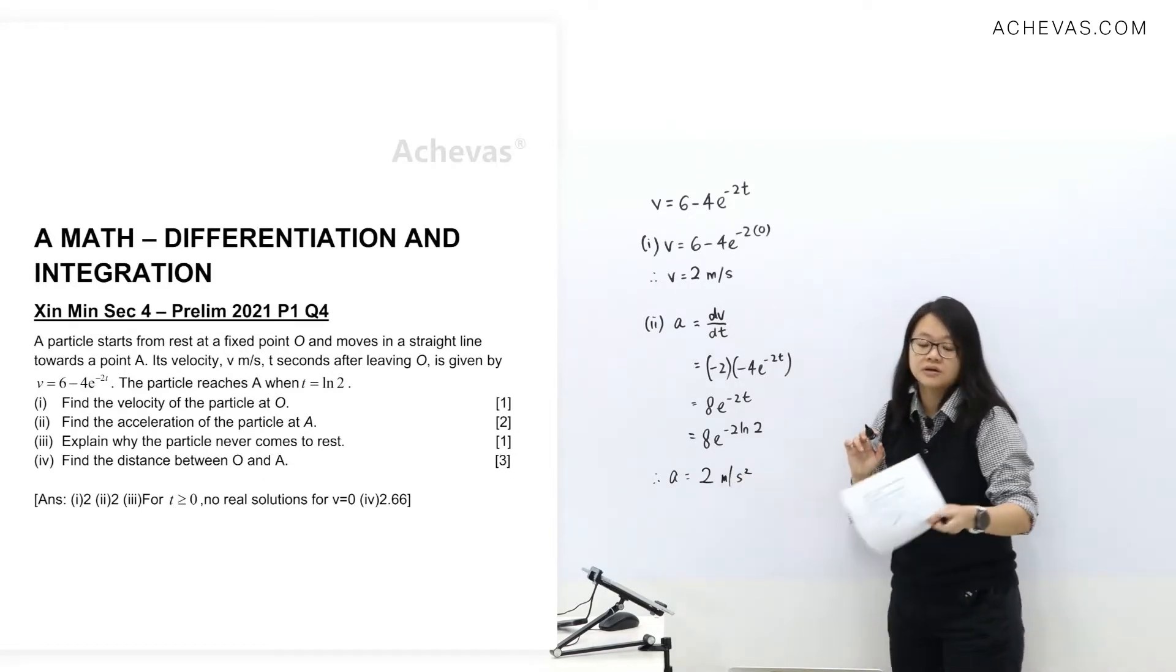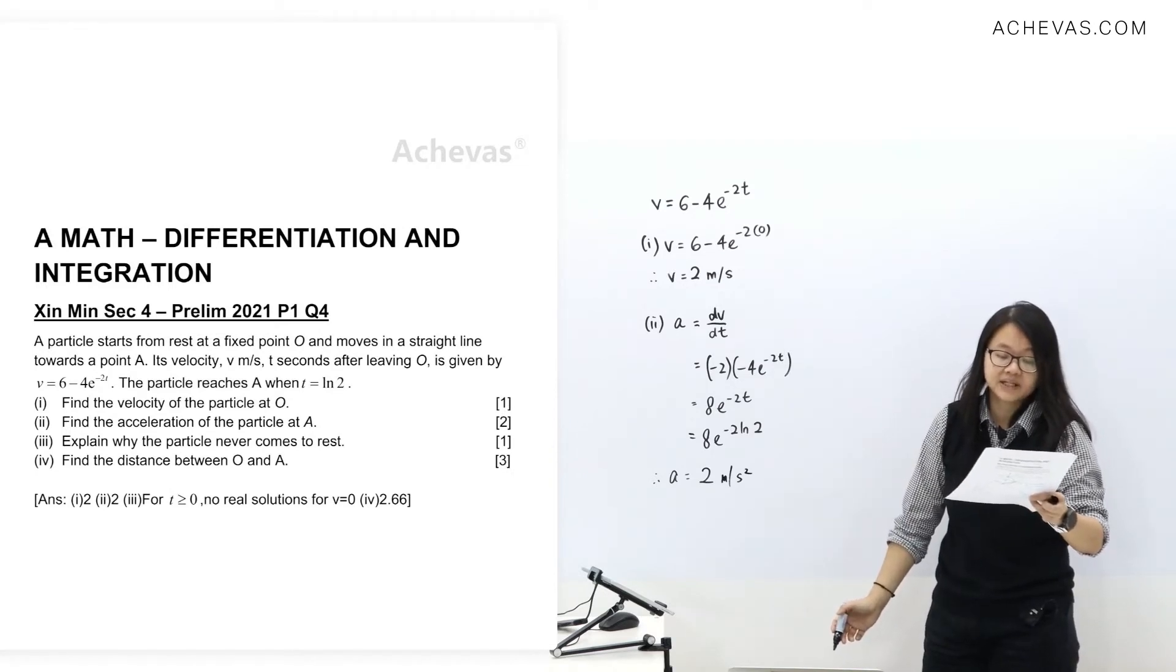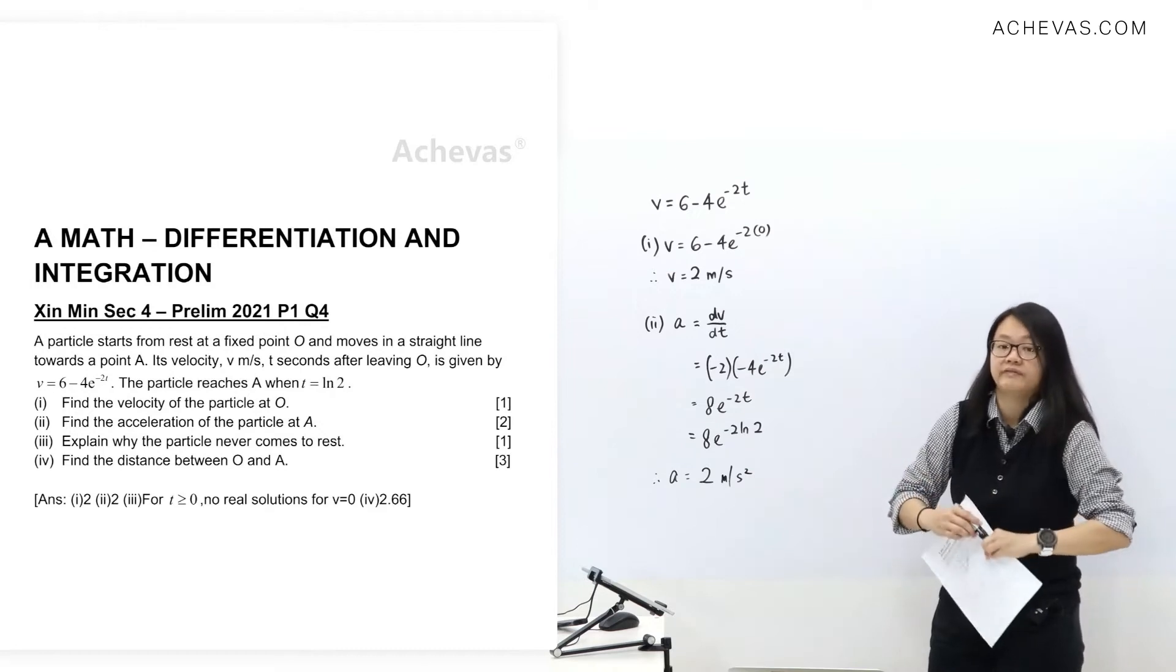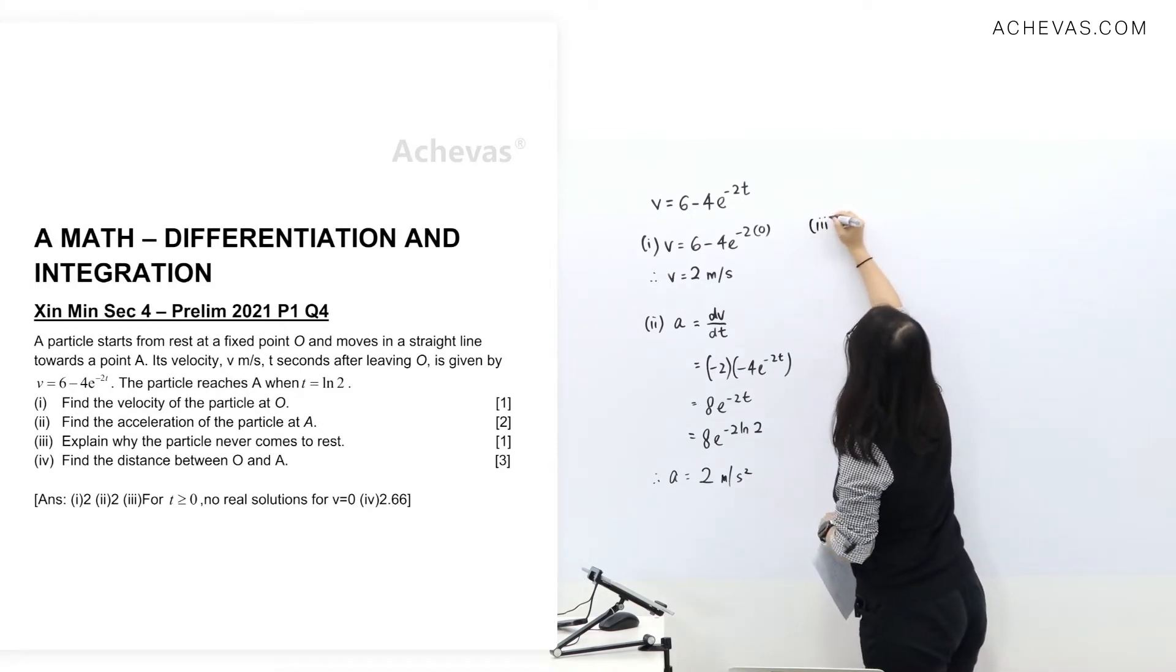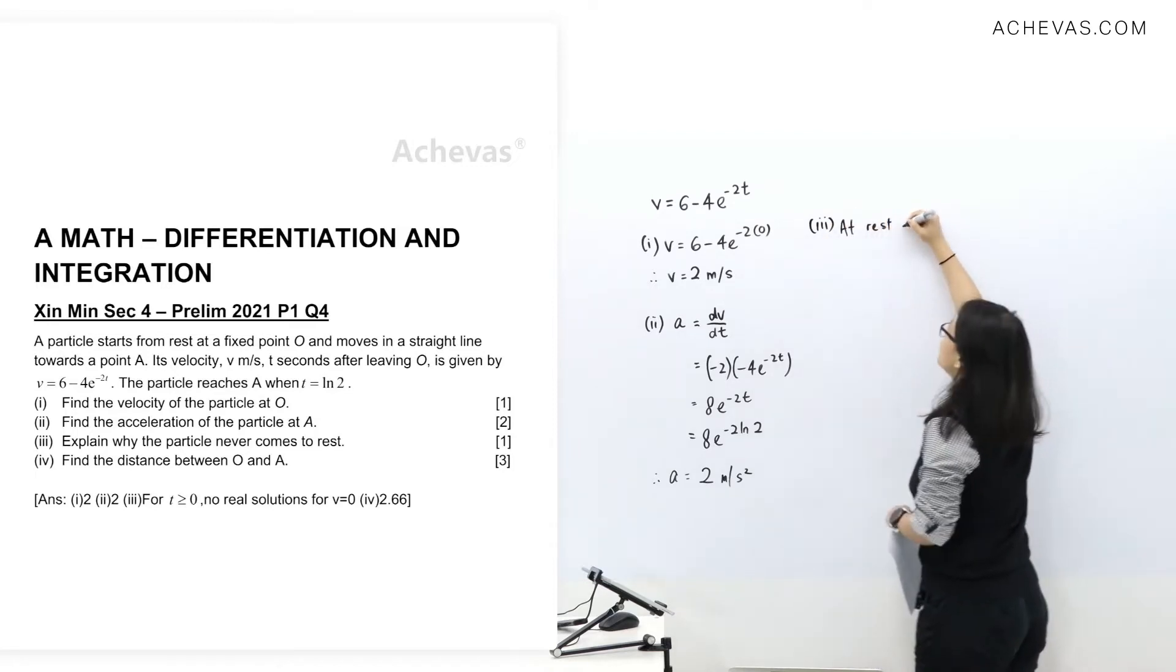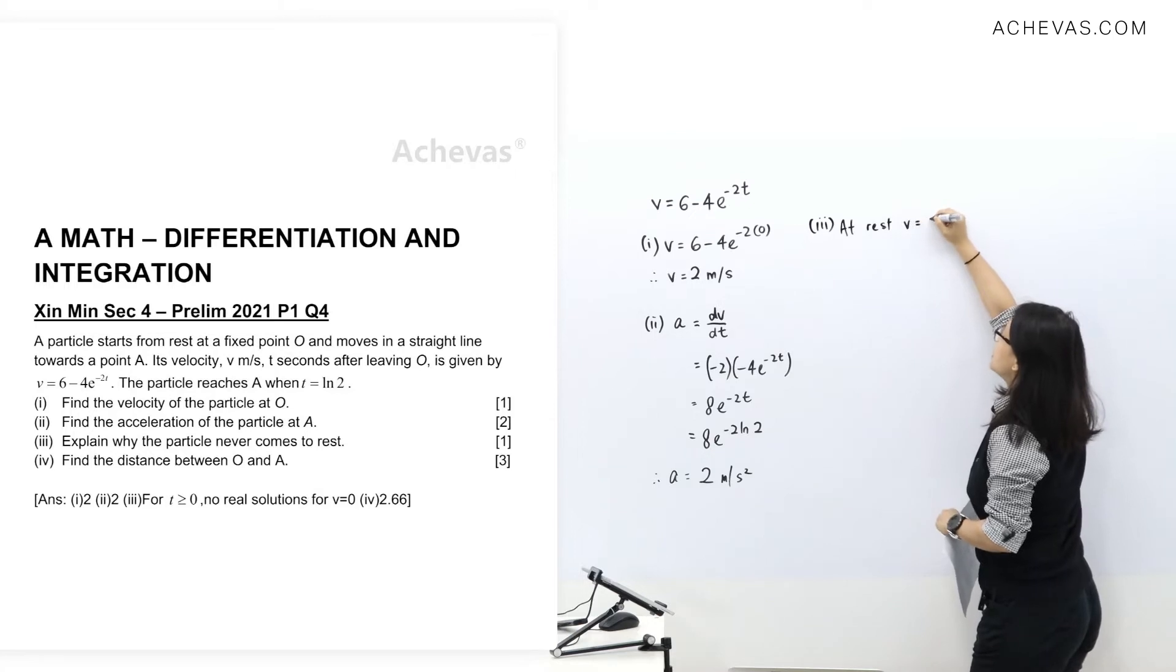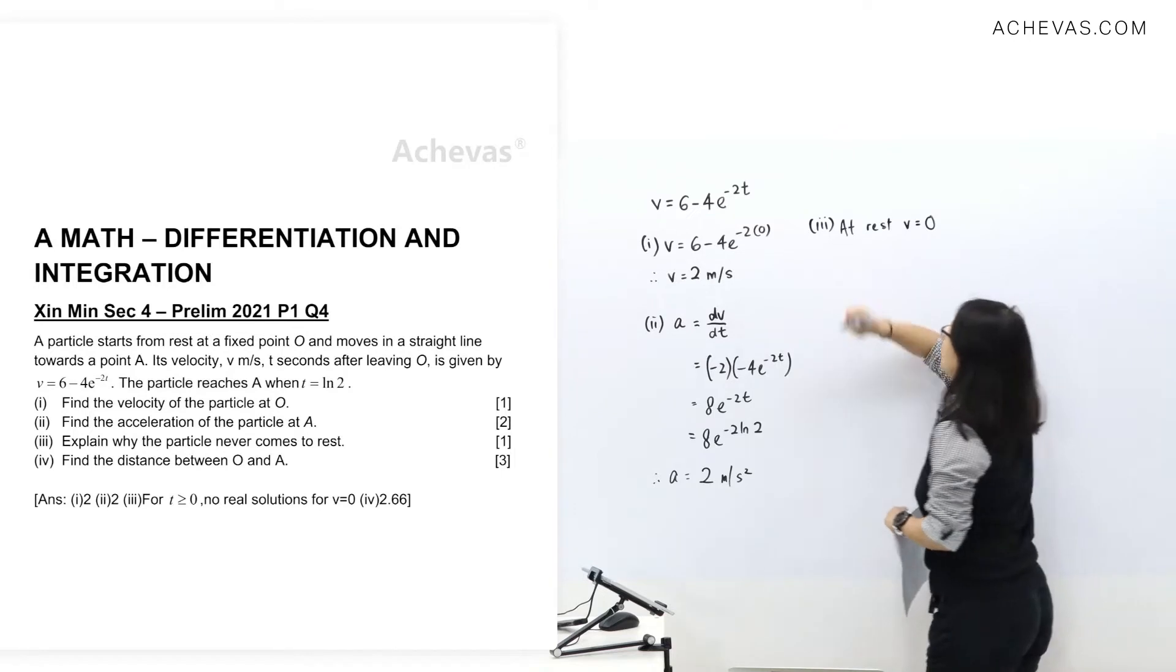Meter per second square. Acceleration. Part 3, explain why the particle never comes to rest. I'm going to show you two ways of explaining. What happened at rest is that we all know that velocity must be equals to 0. Let's just try to solve this and see what happens.